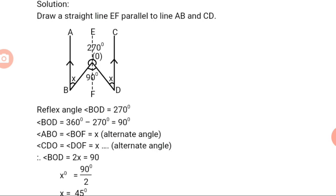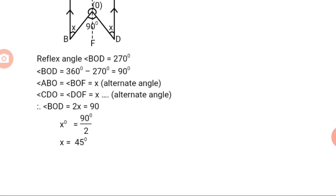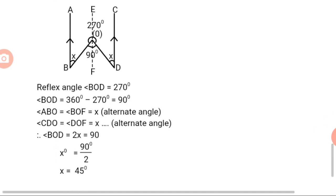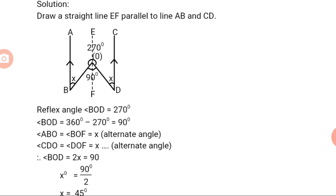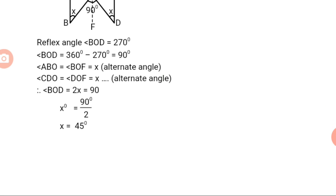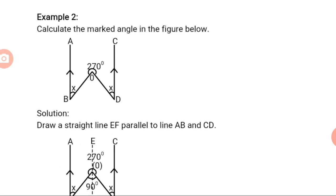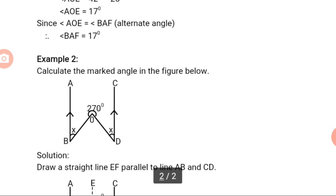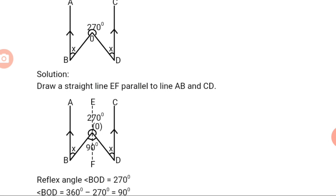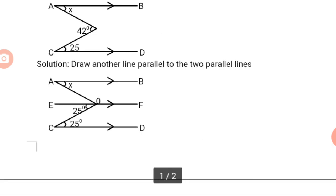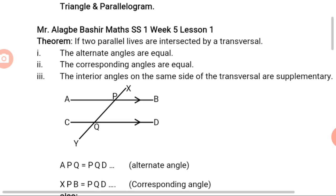Therefore, angle BOD is equal to 2X, which equals 90 degrees. So X equals 90 degrees divided by 2, which is equal to 45 degrees. Therefore, angle X is 45 degrees. Whenever you are given something like this, you should try to draw another line that is parallel to the two given lines. Once you know corresponding angles and alternate angles, everything will be easier.